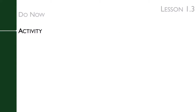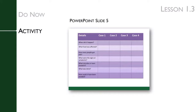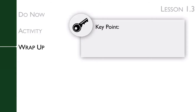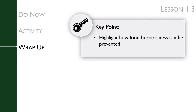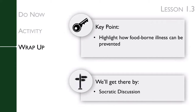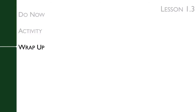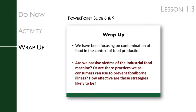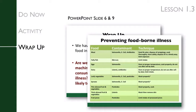After students have completed their jigsaw reading and taken notes on the worksheet, you'll organize a teach back in which students teach each other about food outbreaks and contaminants. The key point of the wrap-up is to highlight how foodborne illness can be prevented. We get there by having a Socratic discussion, asking students to brainstorm ways consumers can prevent these outbreaks. Get students to think microbe versus non-microbe: storage and cooking methods can reduce illness from microbes, but only limiting exposure or washing the surface of food can prevent non-microbe illness.